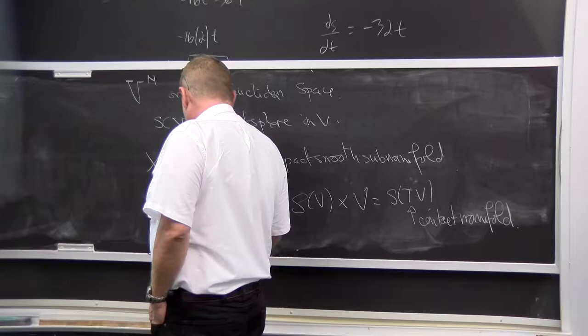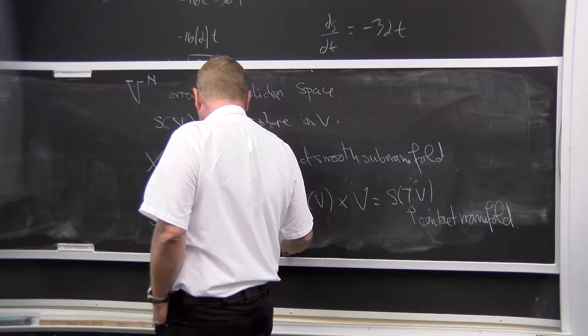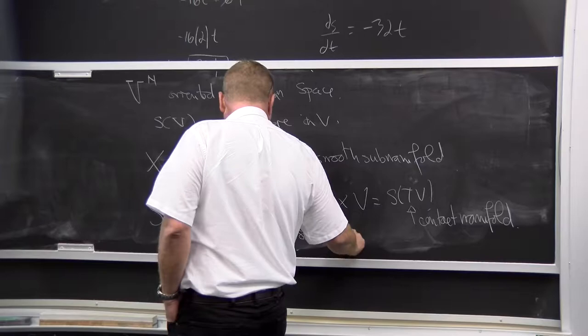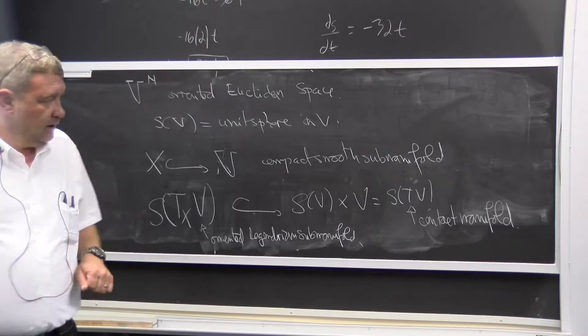And this is oriented Legendrian — a compact Legendrian manifold. You should think of this as a current of integration sitting in there.